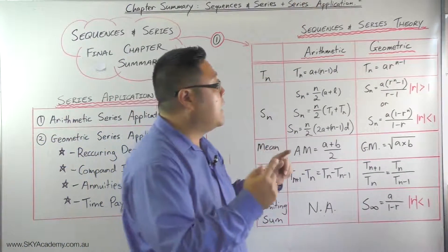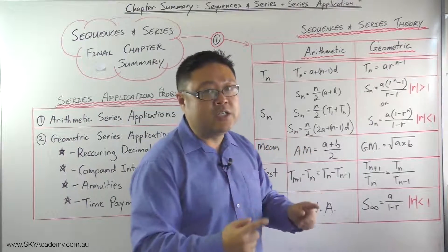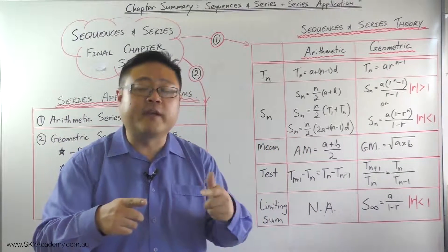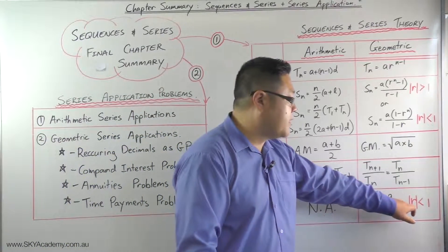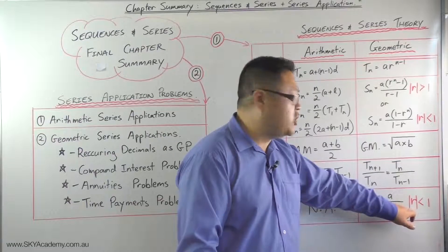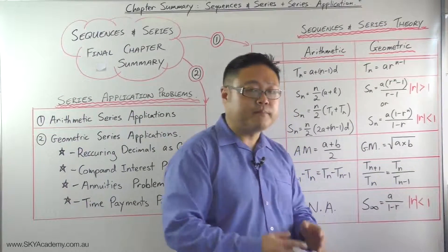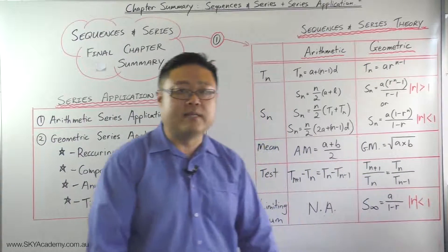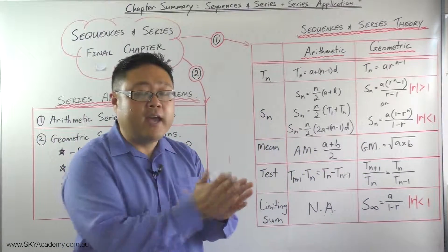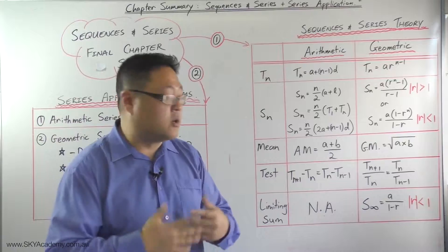The conditions for it being not divergent—the word being convergent, which is the opposite—is when the ratio, the common ratio, is between negative one and positive one. In other words, where the absolute value is less than one and where you have a sum that keeps on going to infinity.